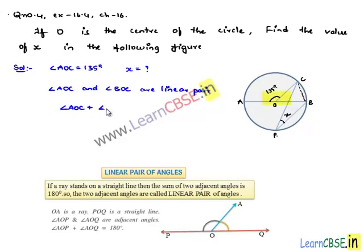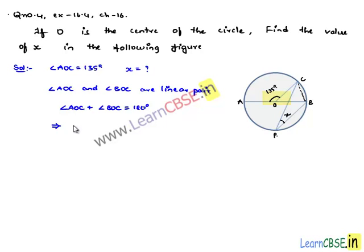Angle AOC plus angle BOC is equal to 180 degrees, which implies 135 degrees plus angle BOC is equal to 180 degrees. Therefore, angle BOC is equal to 180 degrees minus 135 degrees, that is 45 degrees. We got angle BOC value as 45 degrees.